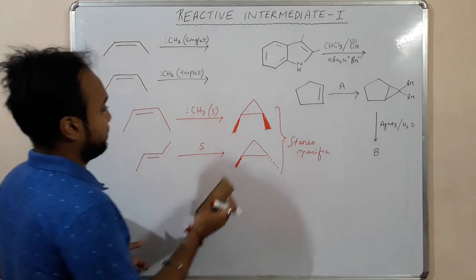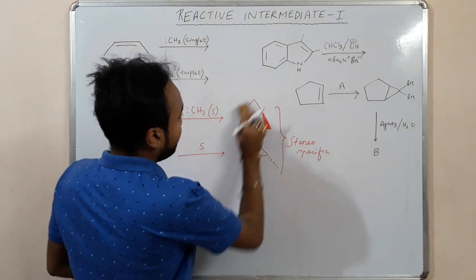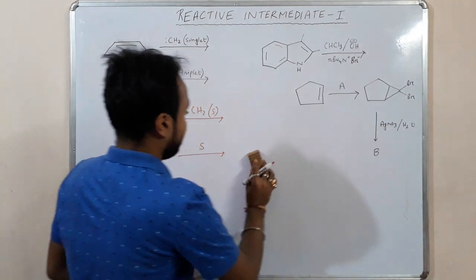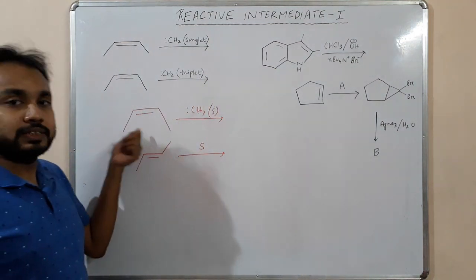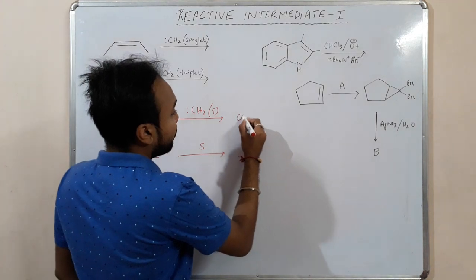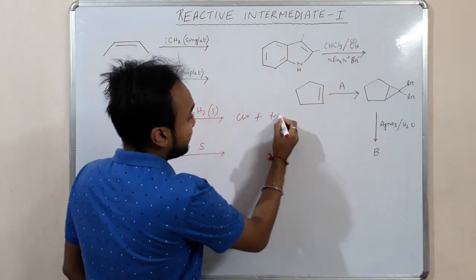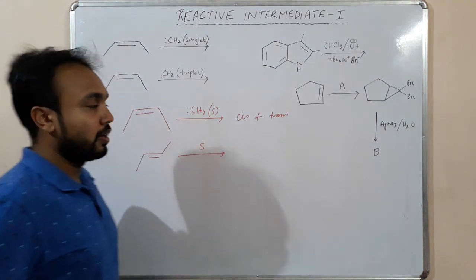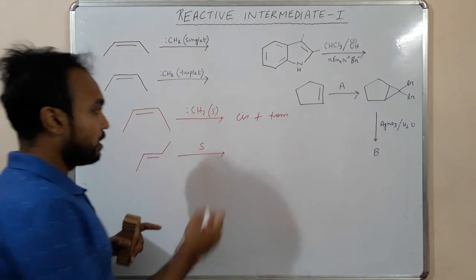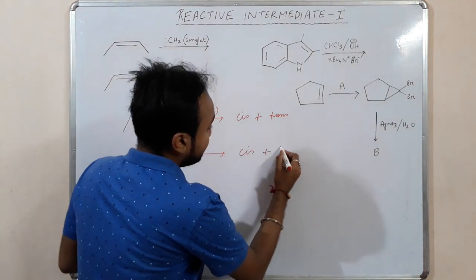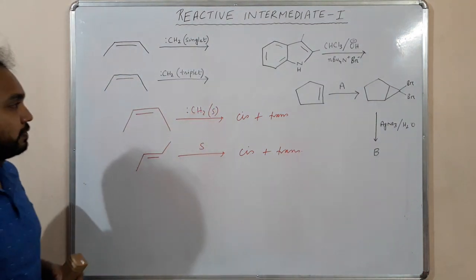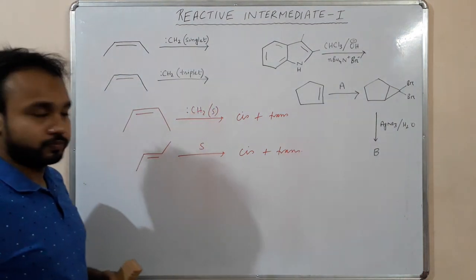If we do this reaction in the presence of triplet carbine, the result is different. Starting with a cis alkene we will get a mixture of cis and trans products, and starting with a trans alkene we also get a mixture of cis and trans isomers. So this is not stereospecific.